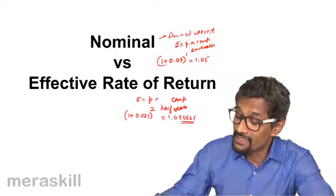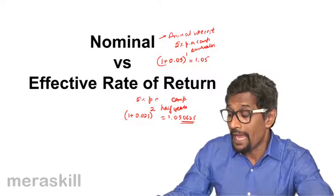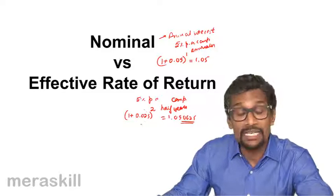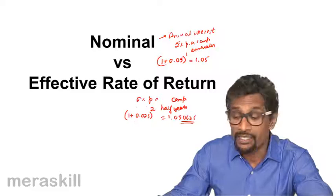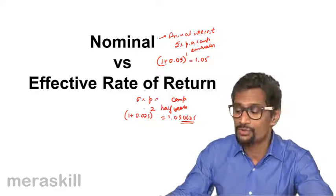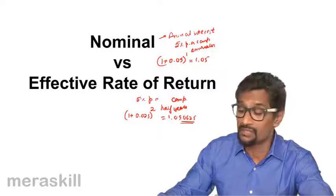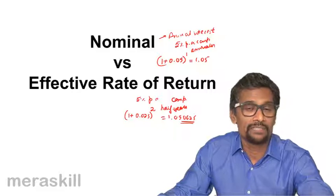And hence, the effective rate of return is going to be quite different from nominal rate of return. And if you increase the number of times it's compounded from this, you make it quarterly, you will find that the rate of interest will change even compared to this. So this is what is going to be covered in this particular topic, nominal rate versus effective rate of return.